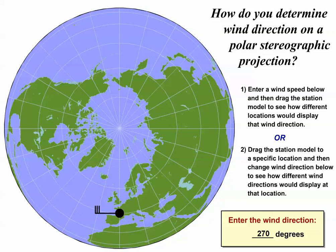To help you get a feel for determining wind direction on polar stereographic maps, I'm going to use this interactive tool that shows a station model and allows you to change its location as well as wind direction. First let's get our bearings.